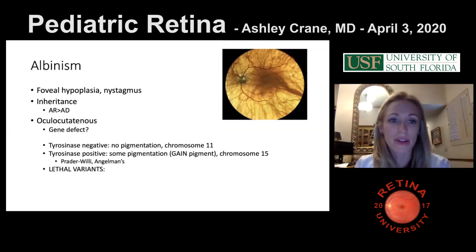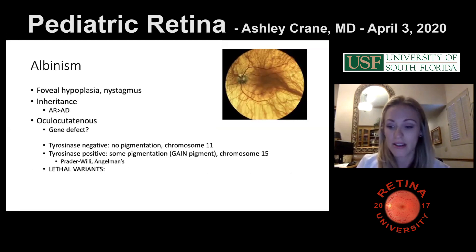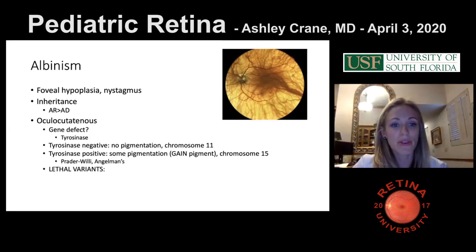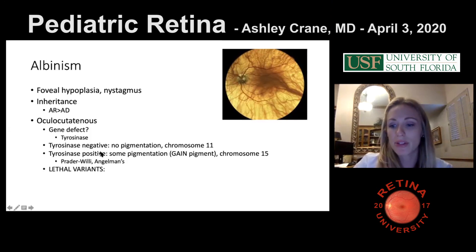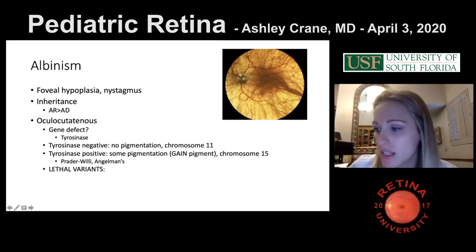Albinism — most of these patients have foveal hypoplasia and nystagmus. The inheritance is recessive more than dominant. The gene defect involves tyrosinase. Tyrosinase-negative patients have no pigmentation — that's chromosome 11. Tyrosinase-positive patients gain pigment — chromosome 15. Remember that chromosome 15 is also associated with Prader-Willi and Angelman's syndromes.